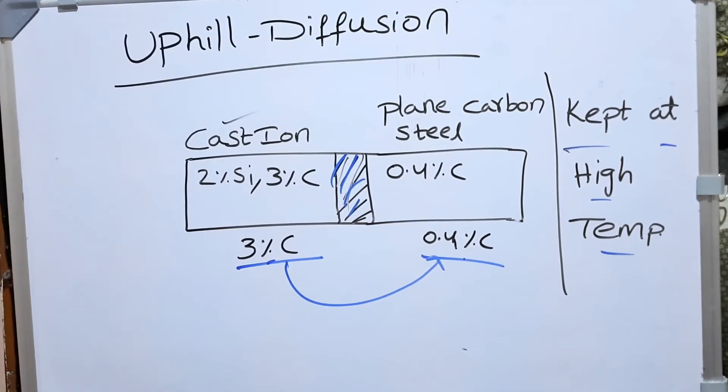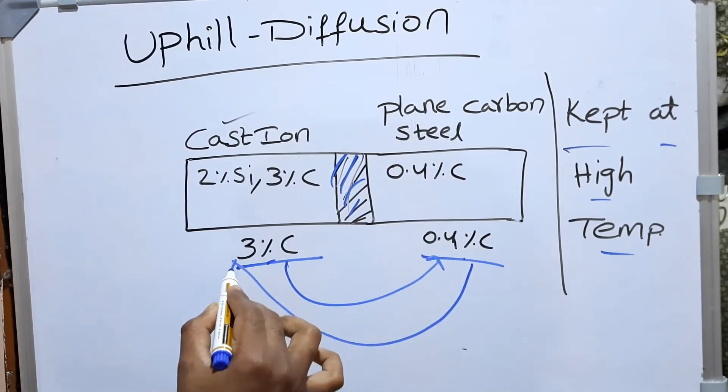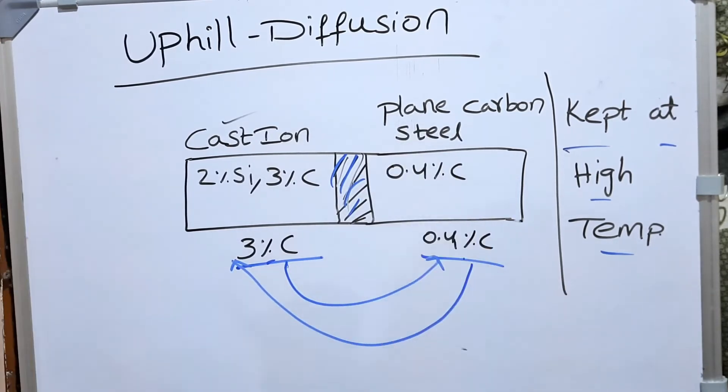Instead of carbon moving from cast iron to plain carbon steel, carbon moves from lower concentration to the higher concentration, which is uphill. We are going against the concentration gradient.